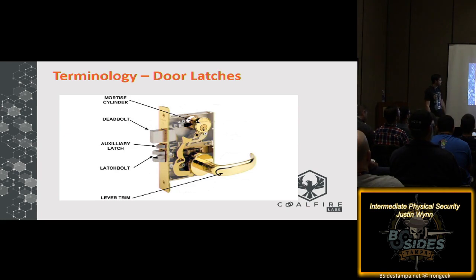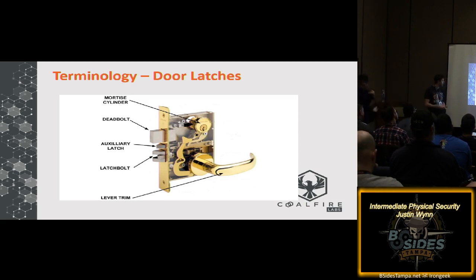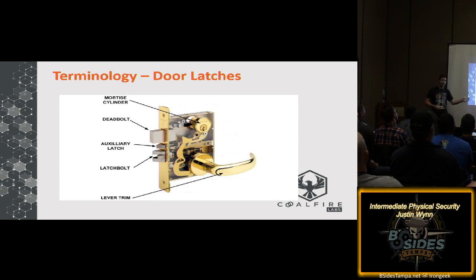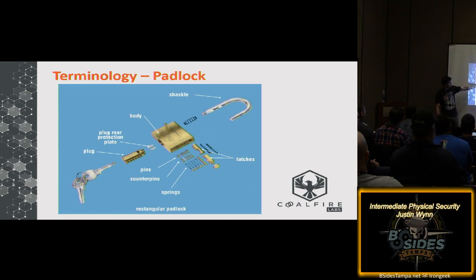Moving on — this is another diagram showing door latch components. We have an auxiliary deadlatch, which is the piece in the middle. When the door closes, this is meant to depress against the strike plate. The deadbolt and latch bolt extend into the strike cavities and keep the door shut within the frame. The auxiliary deadlatch, when depressed and closed, prevents the latch bolt from retracting again, locking it in place much like a deadbolt. In a padlock, the plug rear protection plate prevents tools from slipping beyond the authentication mechanism — the plug — so you can't manipulate latches. Not all padlocks have these, and there is a bypass associated, which we'll cover.